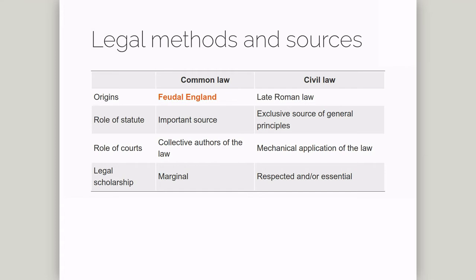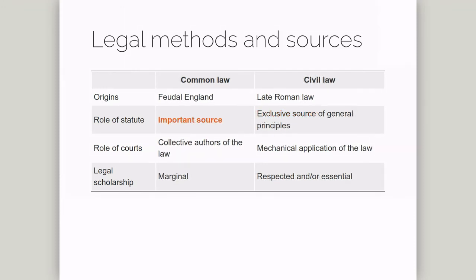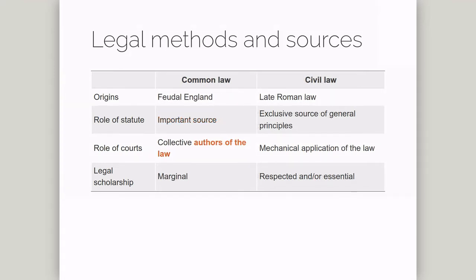The role of statute is different in the two systems. In a code law system, statute, or legislation passed by the Parliament, including the different codes, is the exclusive source of general principles. In common law systems, by contrast, statute is important, but you also have to bear in mind past precedent. Because precedent matters in common law systems, courts are regarded as, in part, authors of the law. There's no such creative role in code law systems.